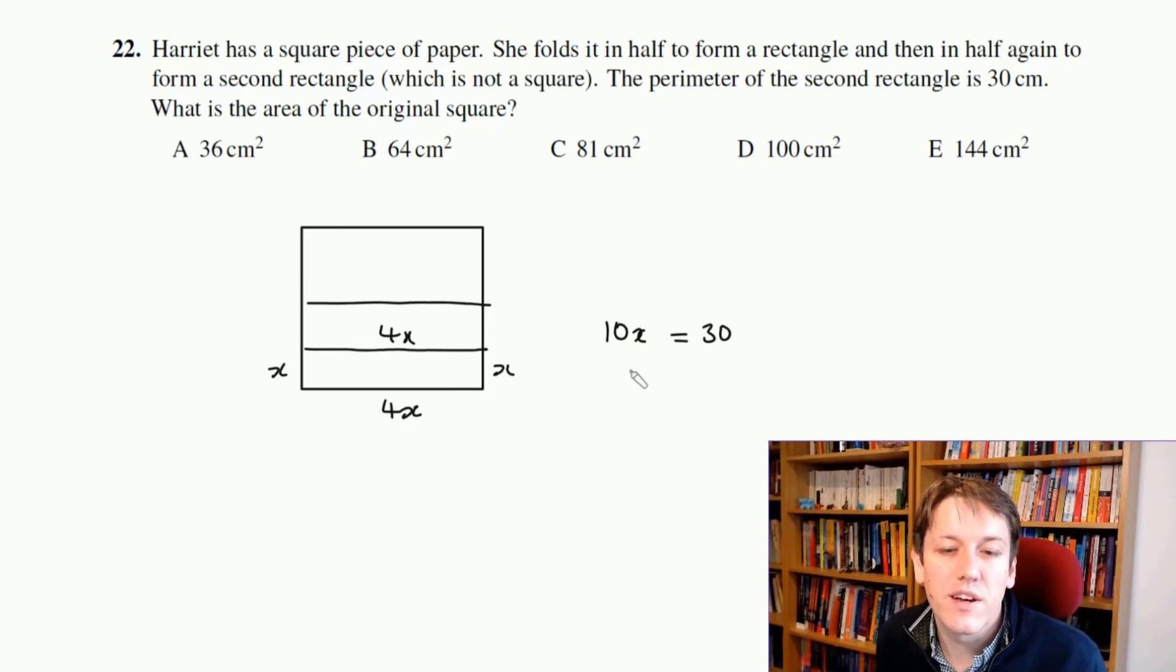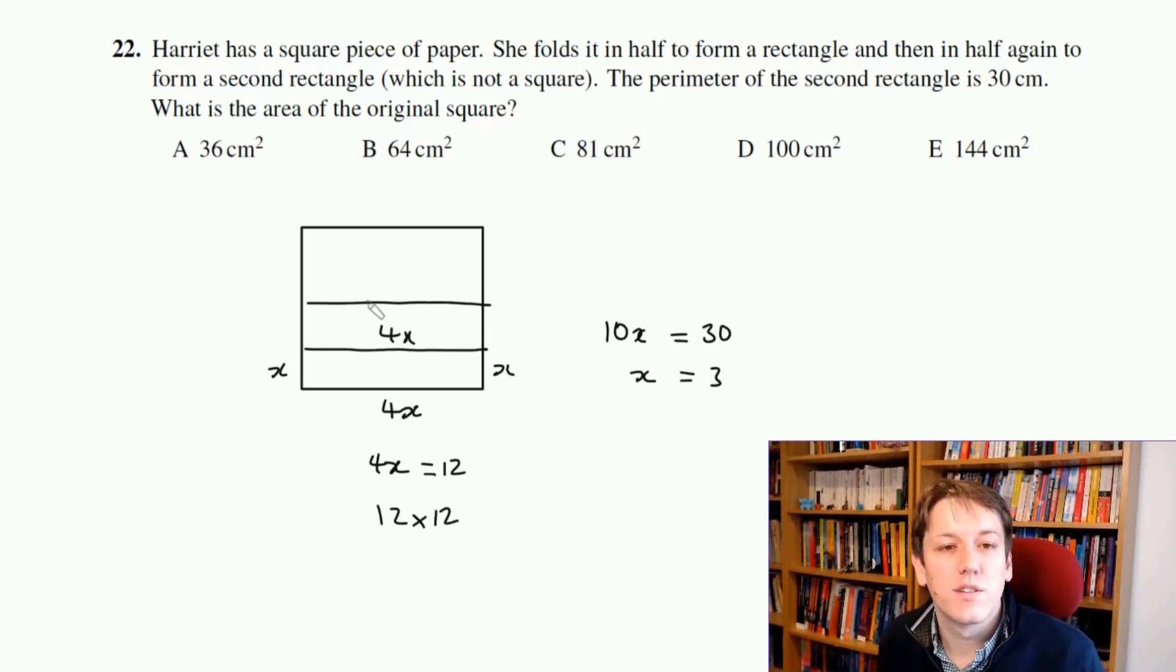So 10x is equal to 30, that means x equals 3, so 4x is equal to 12, and this square is a 12 by 12 square then, so the area of the original square is 12 times 12, which is 144.